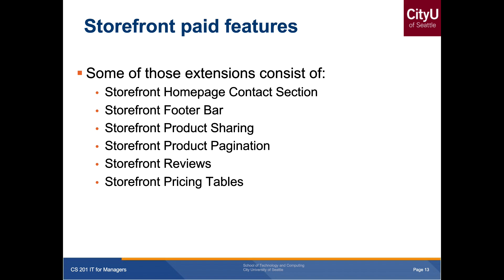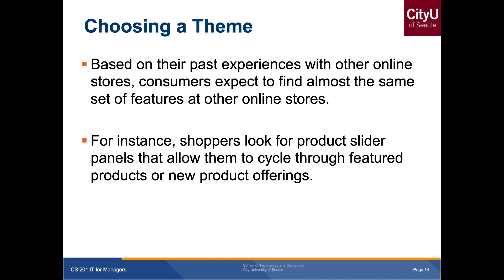The footer bar is what you see at the bottom — for example, in this slide, it's the blue section. Product sharing includes something like a share button. Product pagination is basically clickable page one, page two, page three, with next and previous buttons. Reviews we already know. Pricing tables are just prices presented in tables. When choosing a theme, make sure the one you're choosing is targeted to your audience.